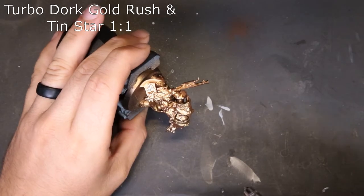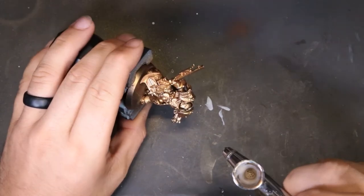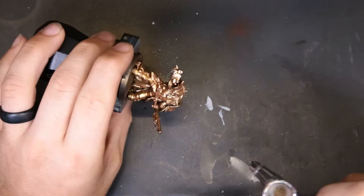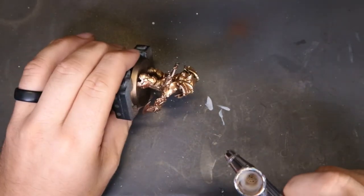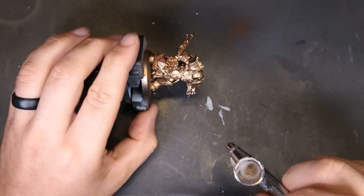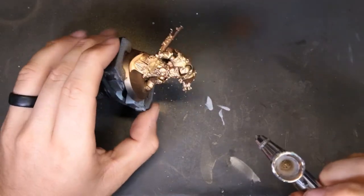So I wanted to keep pushing the brightness towards the top. We mixed the Turbo Dork Gold Rush and Ten Star about one to one, threw it in the airbrush, let it rip. Again, we're having great results with this stuff. This stuff is very plug and play. You can just jam to your airbrush and start going to town on it.